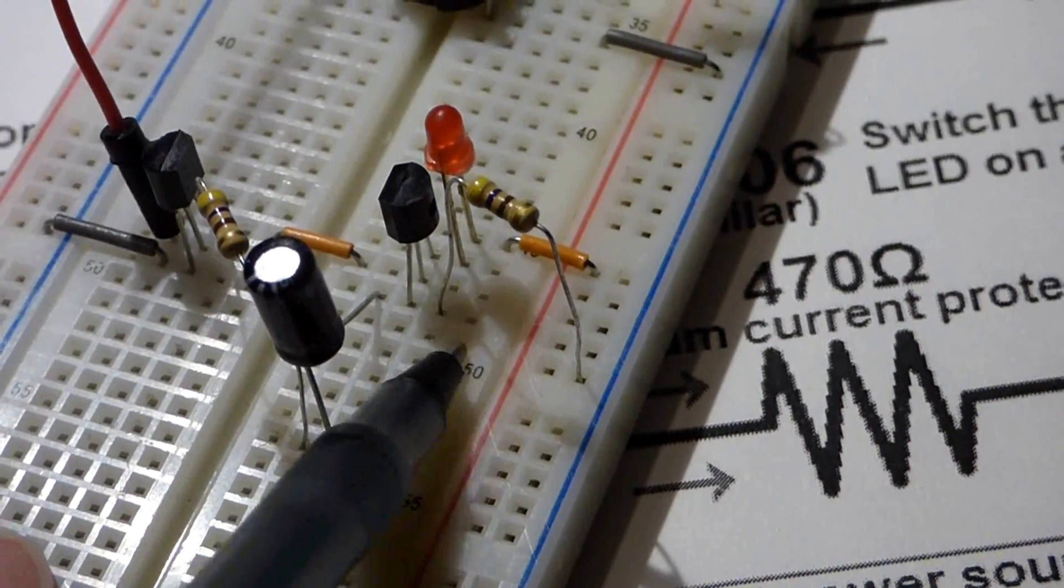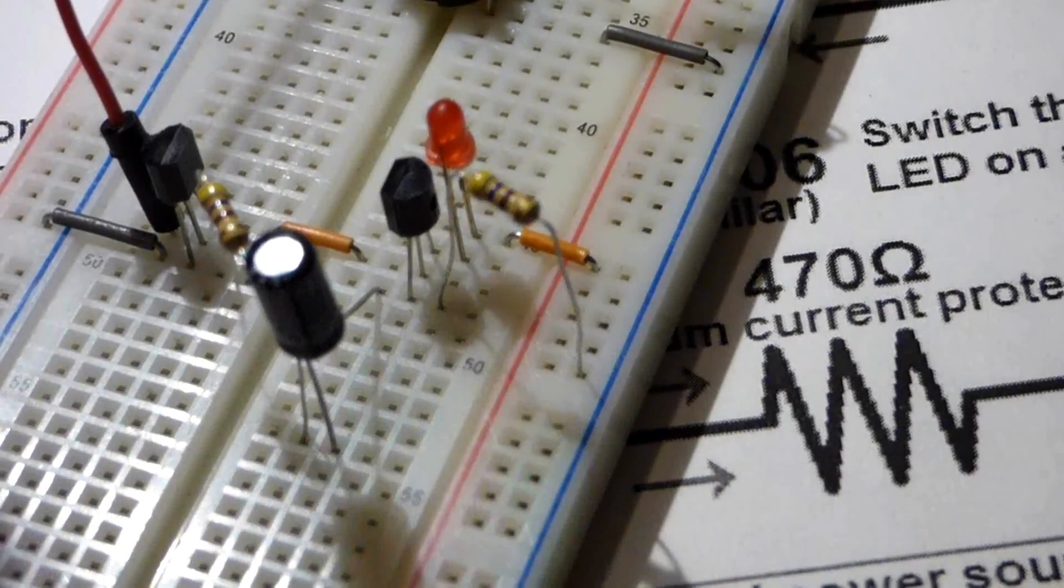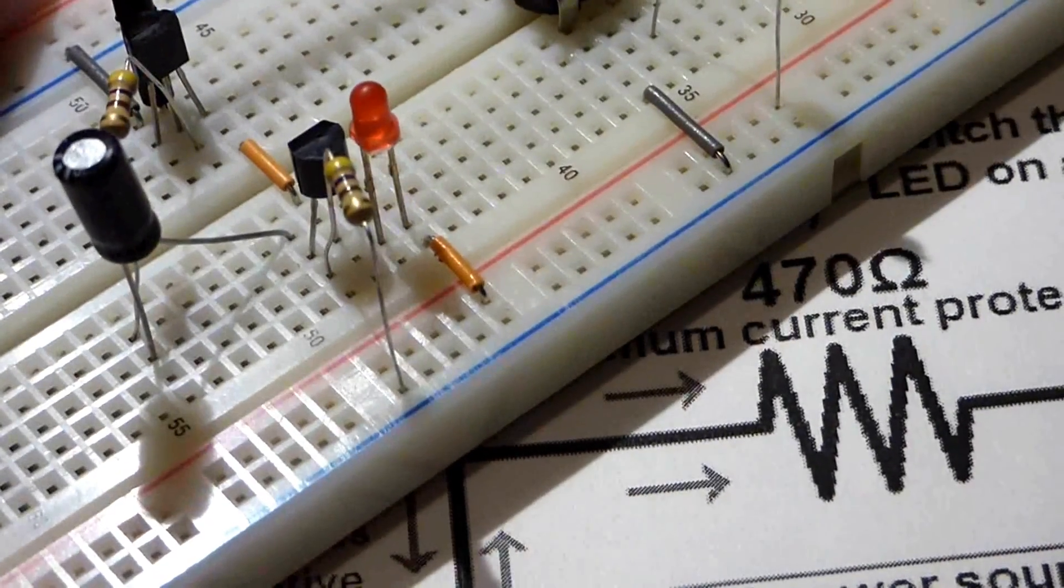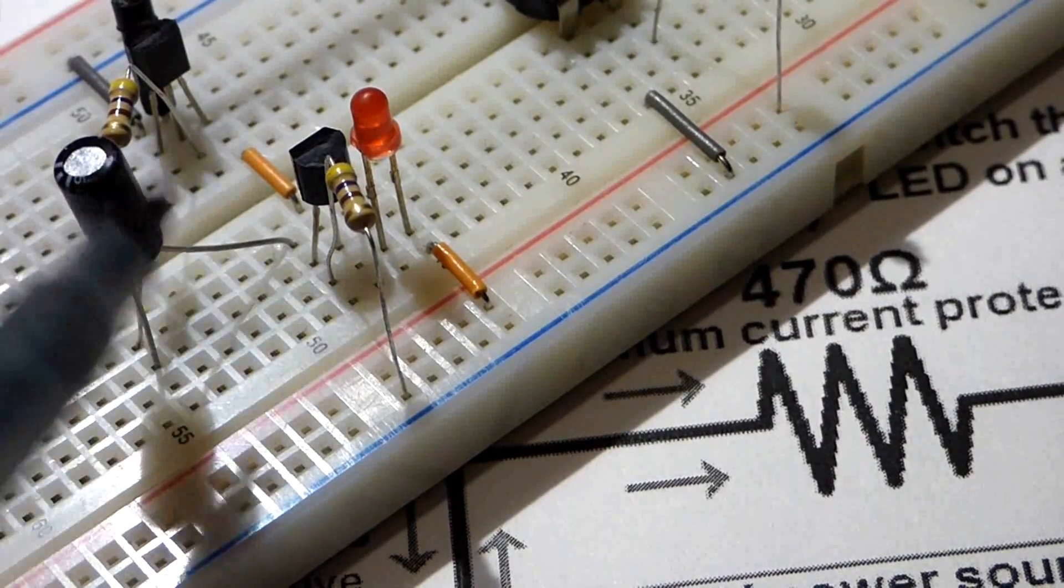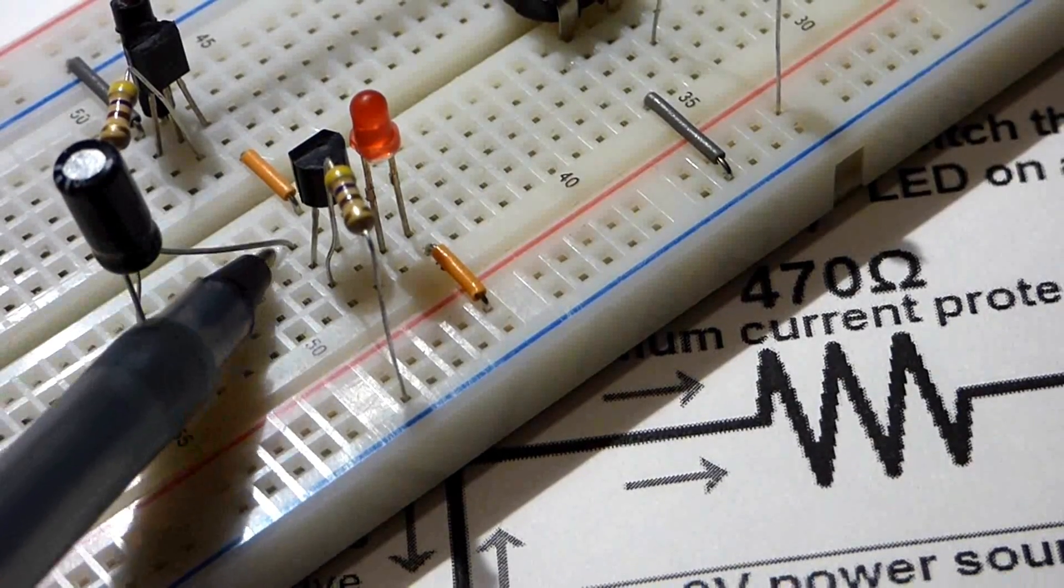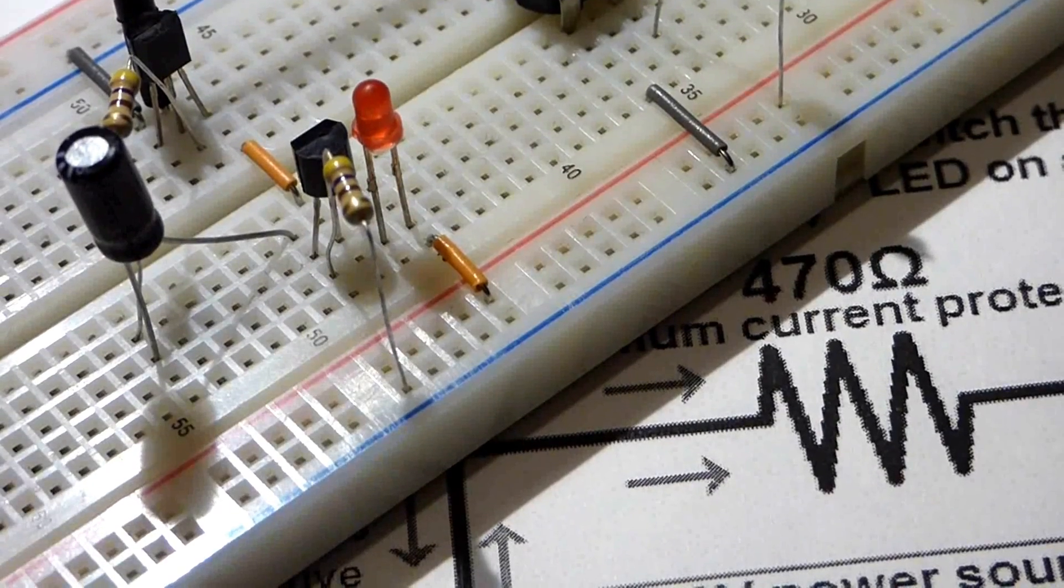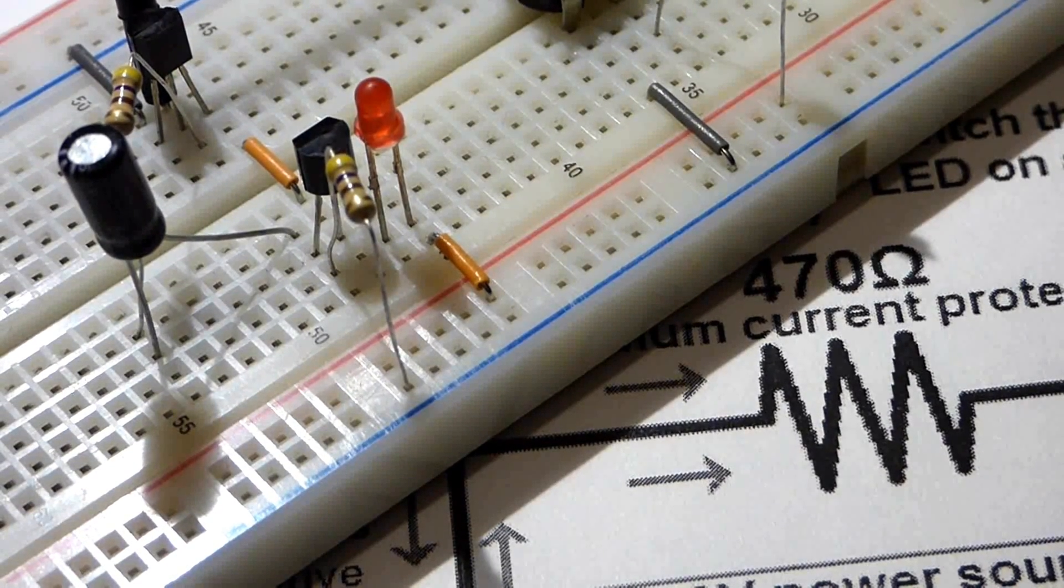So here you can see it's to the collector, the bottom pin. There we go, that shows up a little better in the light. And that goes to the positive side of the electrolytic capacitor, and that completes our complete circuit.